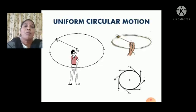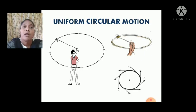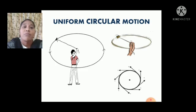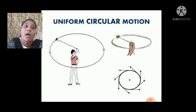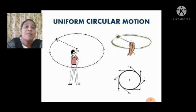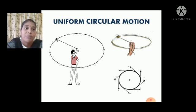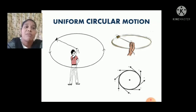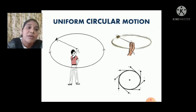Let us discuss one more activity: uniform circular motion. A boy has tied a stone to the end of a string and is rotating the stone in a circular motion using the string. If you look into this picture, the stone is moving in a circular motion, and in the next picture you can see the velocities are changing at every instant of time.